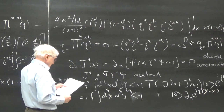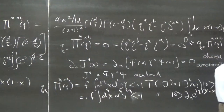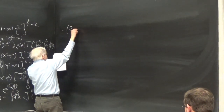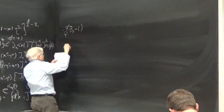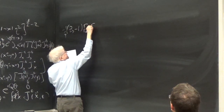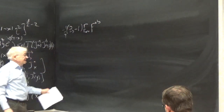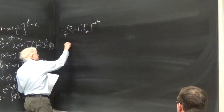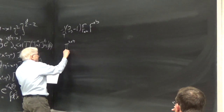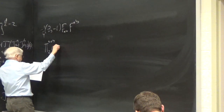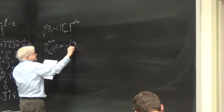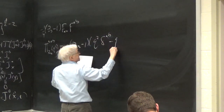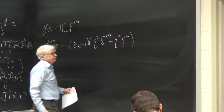So we're going to bring in the counter-term to cancel. In particular, we have the term (Z₃ − 1)/4 × F^AB F_AB in L₂, and it contributes to pi-star^AB a term: ζ₃(Q) = −(Z₃ − 1)(Q² δ^AB − Q^A Q^B). So we're going to add these two terms together — this term plus that term — and use Z₃ to cancel the divergent part.